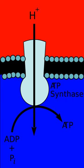In Complex I, also known as NADH:ubiquinone oxidoreductase, NADH-CoQ reductase, or NADH dehydrogenase (EC 1.6.5.3), two electrons are removed from NADH and ultimately transferred to a lipid-soluble carrier, ubiquinone. The reduced product, ubiquinol, freely diffuses within the membrane, and Complex I translocates four protons across the membrane, thus producing a proton gradient. Complex I is one of the main sites at which premature electron leakage to oxygen occurs, thus being one of the main sites of production of superoxide.